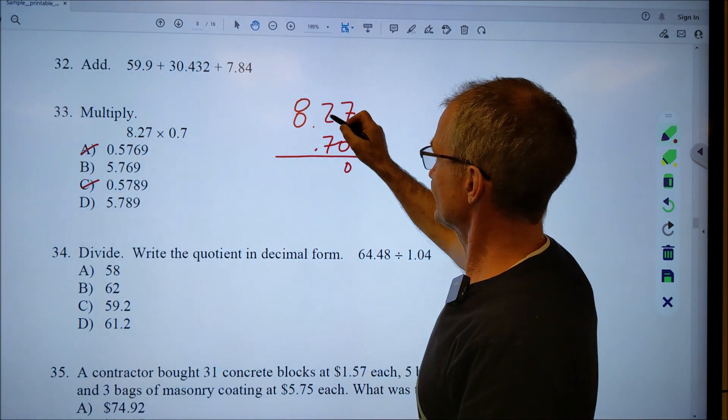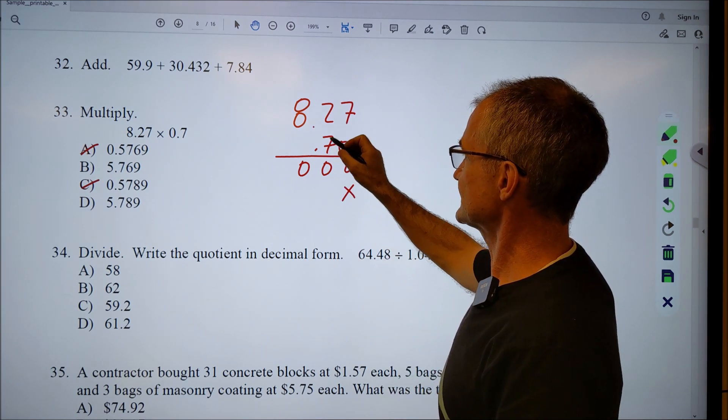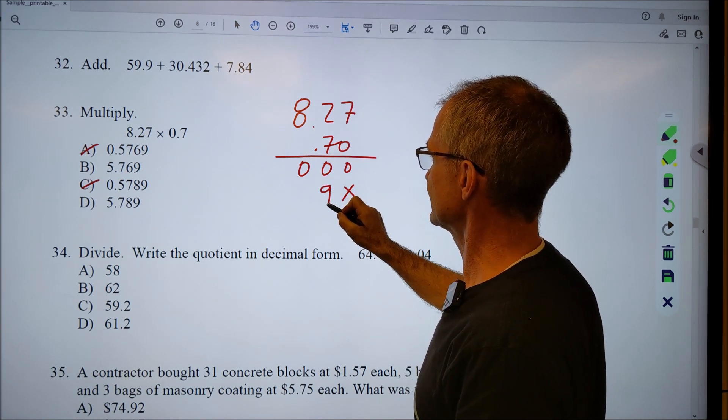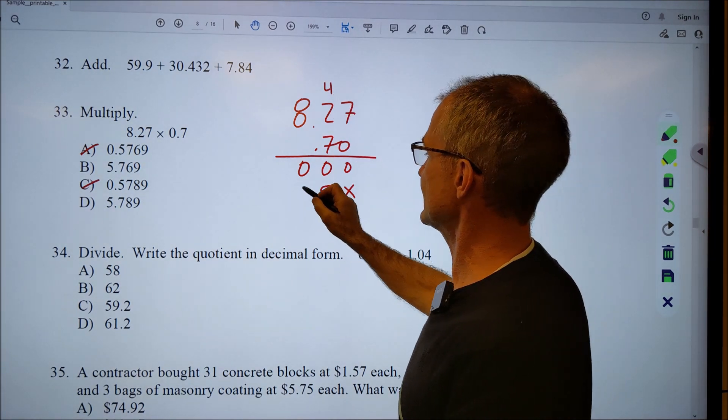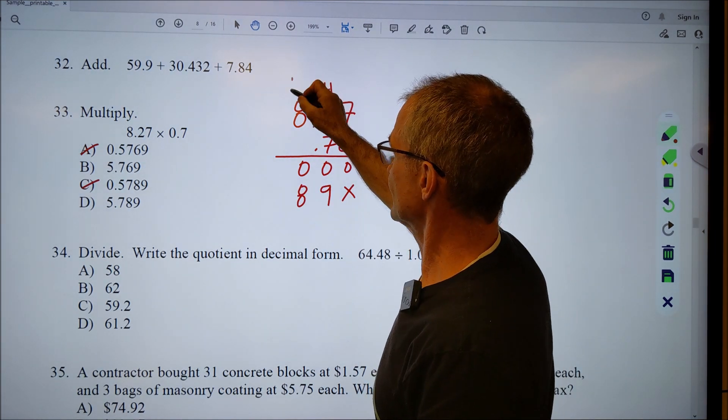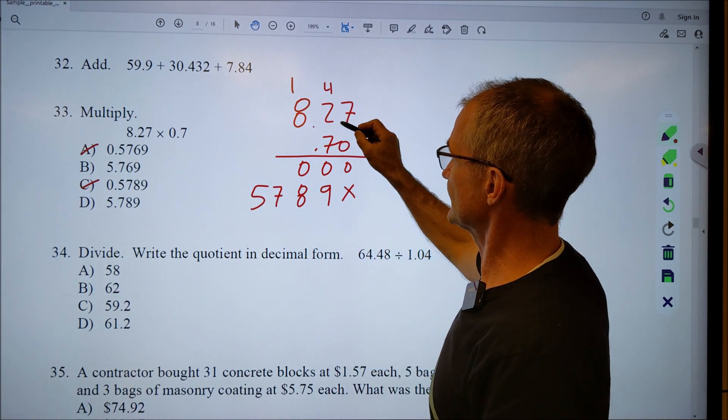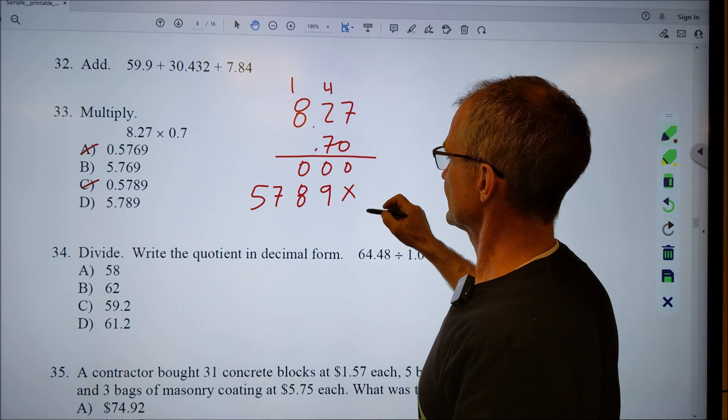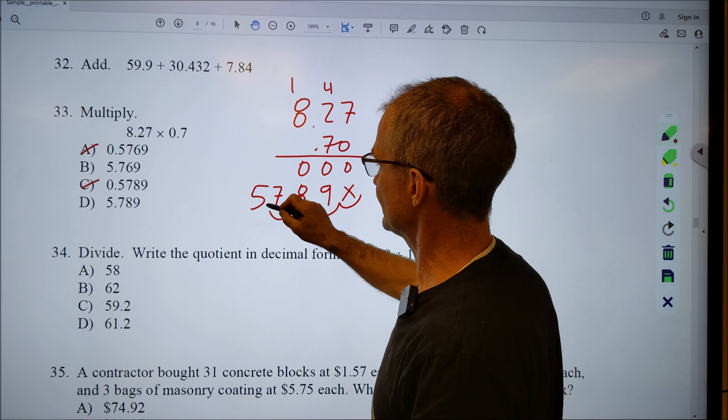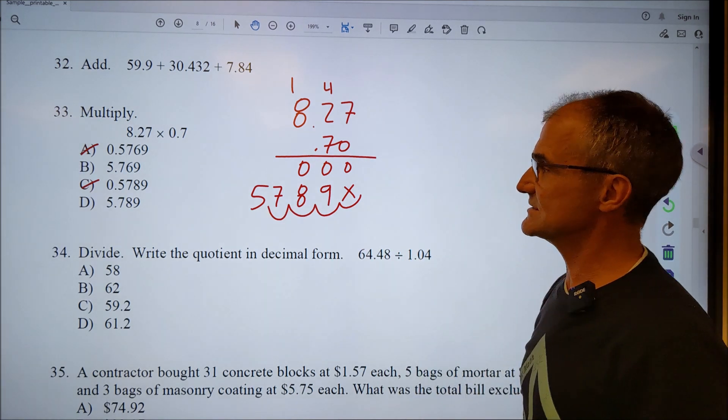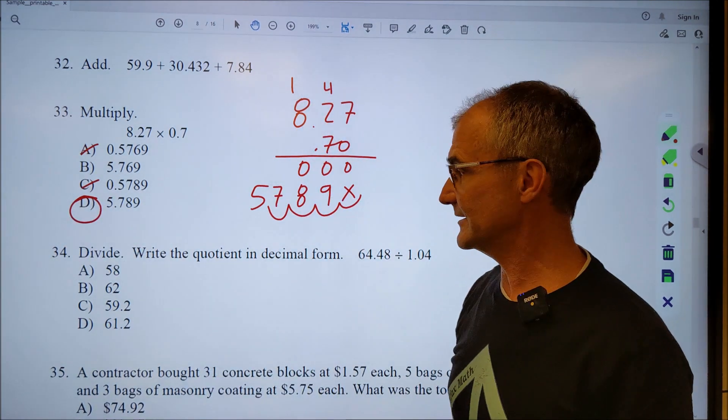Zero times zero times that is all zero. I have a placeholder here. Seven times seven is forty-nine. Forty-nine carry the four. Fourteen and four is eighteen. Carry the one. Fifty-six and one is fifty-seven. My decimal is over one, two, three, four. So when I add this up, I go over one, two, three, four. And I get five point seven, eight, nine. Five point seven, eight, nine. Answer D right there.